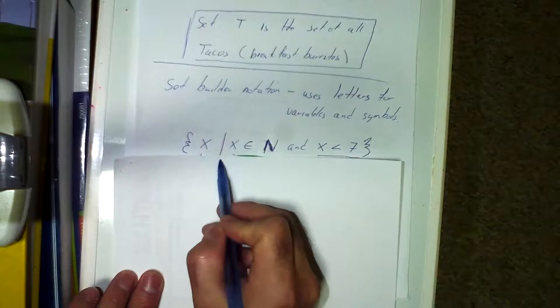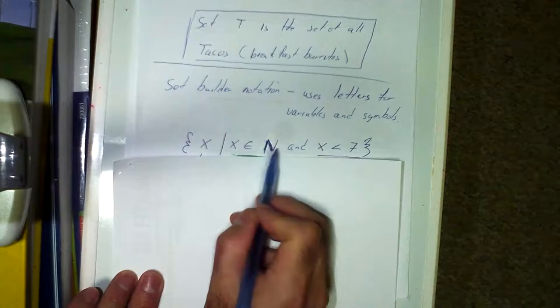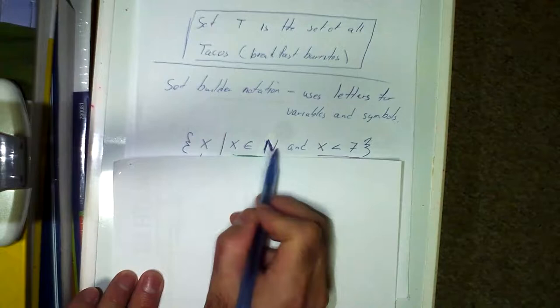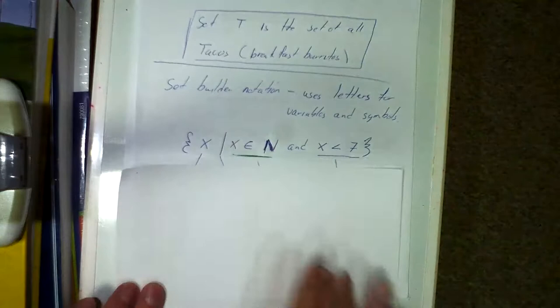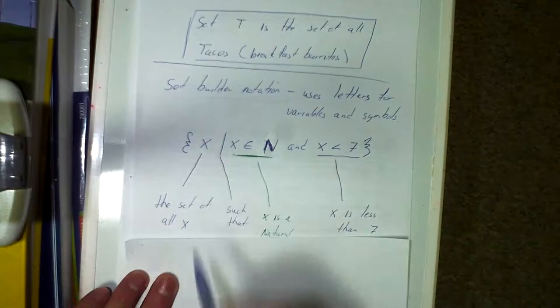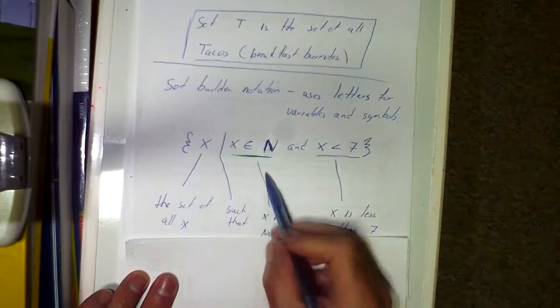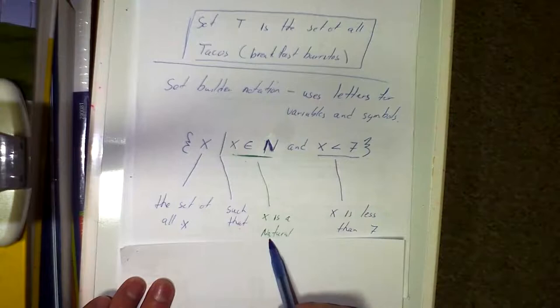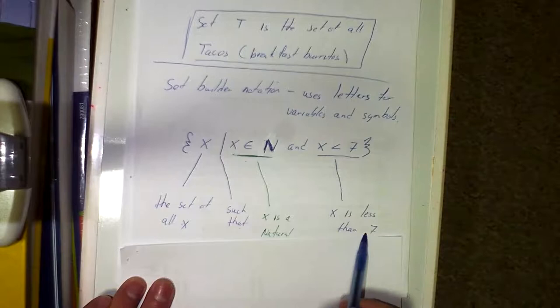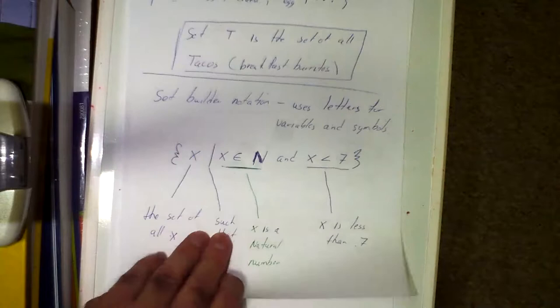Translating into English: this is the set of all x's — the line means 'such that' — x is a natural number, and x is less than 7. That symbol is the less-than inequality. So this reads: the set of all x such that x is a natural number and x is less than 7.